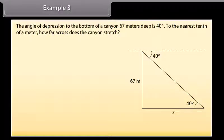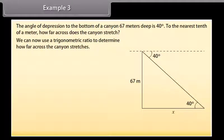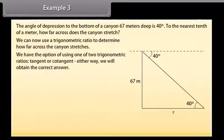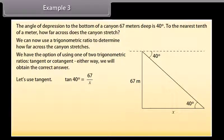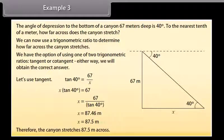The angle of depression to the bottom of a canyon 67 meters deep is 40 degrees. To the nearest tenth of a meter, how far across does the canyon stretch? Start by drawing a diagram — the angle is 40 degrees from the horizontal. We use tangent: tan 40° = 67 / X, so X × tan 40° = 67, therefore X = 67 / tan 40° = 87.46 meters, approximately 87.5 meters. Therefore the canyon stretches approximately 87.5 meters across.